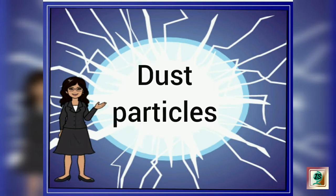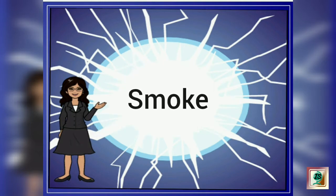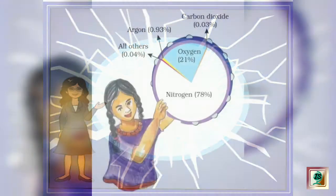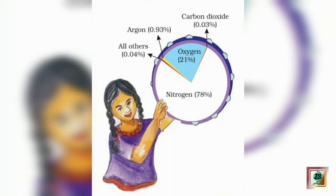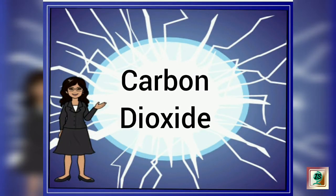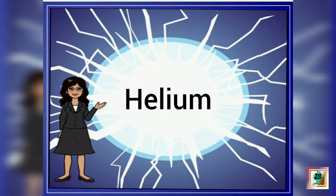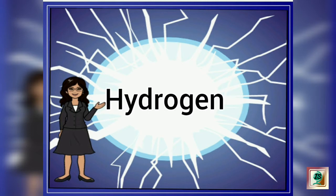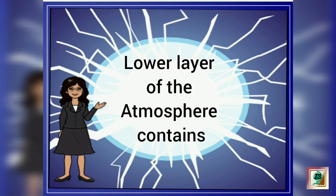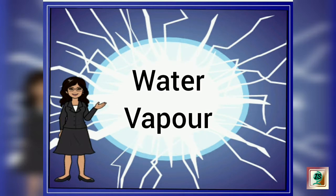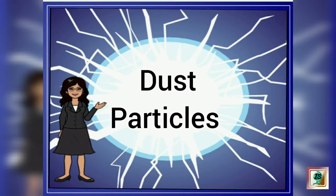Do you know the air we take in while breathing is actually a mixture of gases, water vapor, dust particles, and smoke? The two main gases present in the atmosphere are nitrogen and oxygen. The other gases present in the atmosphere are carbon dioxide, helium, ozone, argon, hydrogen, etc.